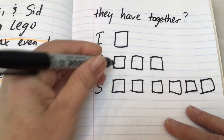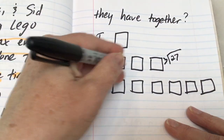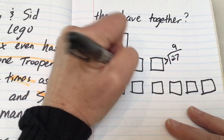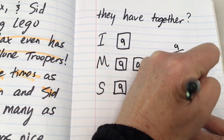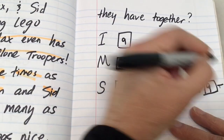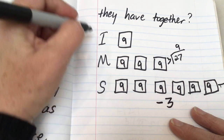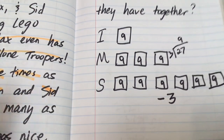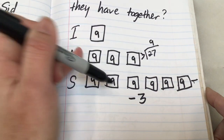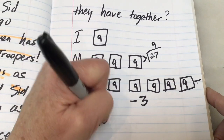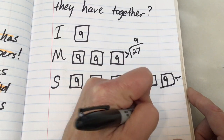The information given is that Max's total is 27, so I divide 27 by three units — that gives me nine for each unit. I know Ian has nine, and Sid has six units of nine, but he gave three to his little brother so I subtract three from his total before adding them all together. I can multiply: there are ten units total, so that's 90 minus 3. Together they have 87 minifigs.